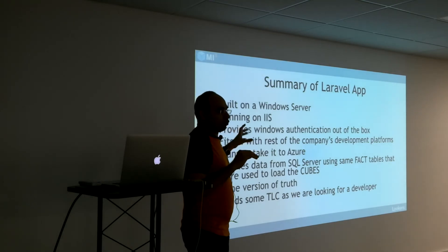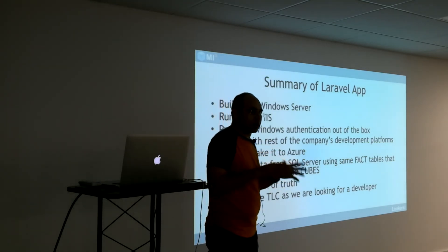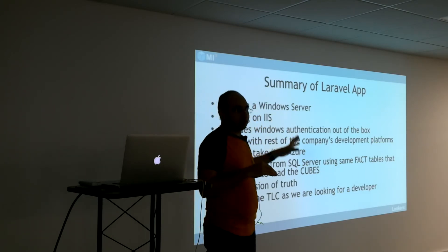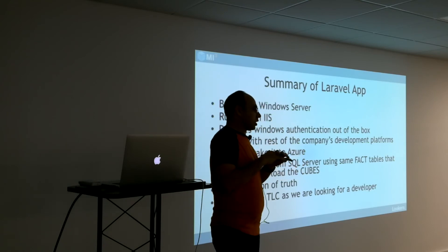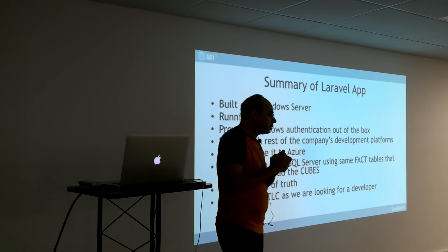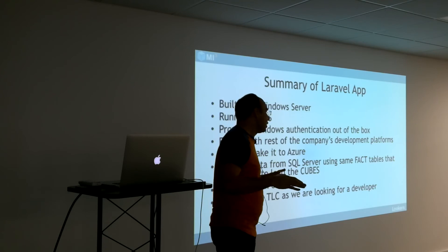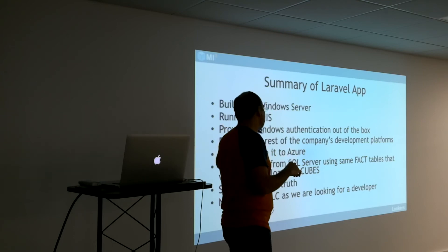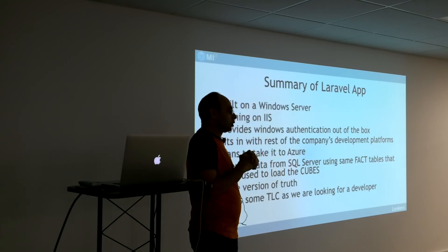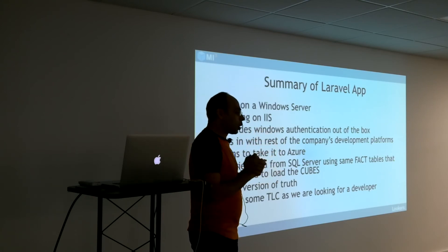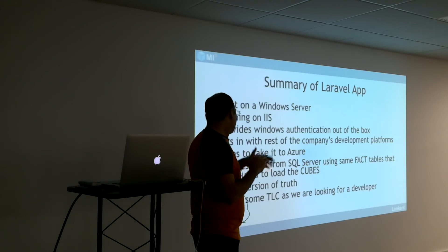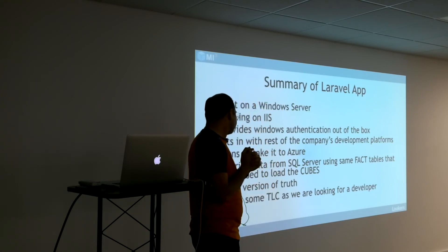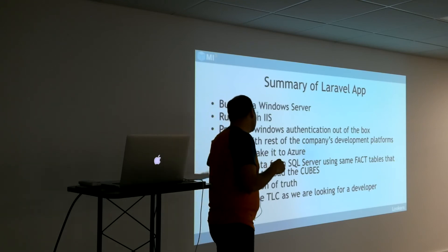A bit different from what most people who have done work in Laravel have done — we have built it on a Windows server, because Lookers is primarily a Windows platform company. So it's running on IIS, and the benefit is it gives Windows authentication out of the box, so we don't have to worry about those 10,000 users — as long as you've got an AD account, it works and you can query any car on the system. We've also got plans to take it into Azure to see how well it runs over there, and it's querying data from the same SQL server in the backend.